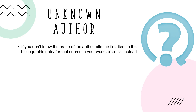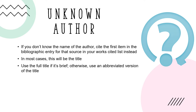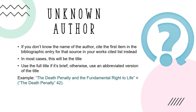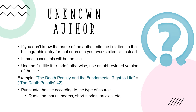If you don't know the name of an author, cite the first item in the bibliographic entry for that source in your Works Cited list instead. In most cases, this will be the title of the source. Use the full title if it's brief; otherwise, use an abbreviated version. For example, if the full title is "The Death Penalty and the Fundamental Right to Life," shorten it to "The Death Penalty" in your in-text citation. Punctuate the title according to the type of source: titles in quotation marks such as poems, short stories, and articles should use quotation marks, while titles that are typically italicized such as books, movies, and journals should also be italicized in the in-text citation.